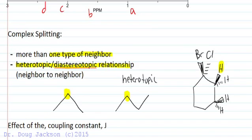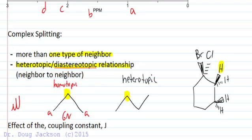To explain complex splitting, consider when we have more than one type of neighbor. For example, we have six neighbors of one type because both methyl groups have a homotopic relationship by a rotation of 180 degrees about the molecule — these are six true neighbors of one type. A is homotopic, these are homotopic neighbors, and they all split the same. So we would expect to see a splitting of seven — a septet for these. That's a normal splitting pattern, though the heights of those peaks are not perfect by Pascal's triangle.